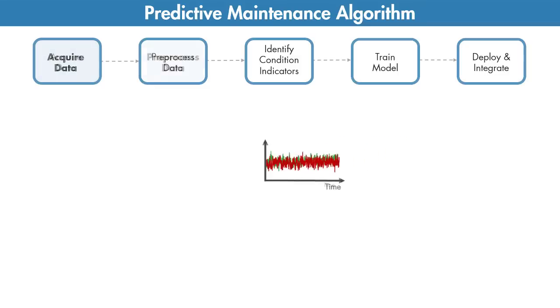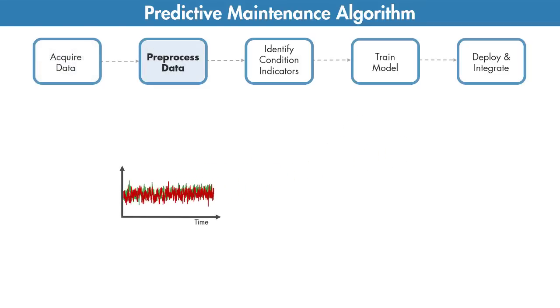Once you have the data, the next step is to remove the outliers and clean it up by filtering out the noise. Sometimes further preprocessing is necessary to reveal additional information that may not be apparent in the original form of the data.